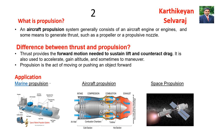What is propulsion? An aircraft propulsion system generally consists of an aircraft engine or engines and some means to generate thrust, such as a propeller or propulsive nozzle. The major difference between thrust and propulsion: